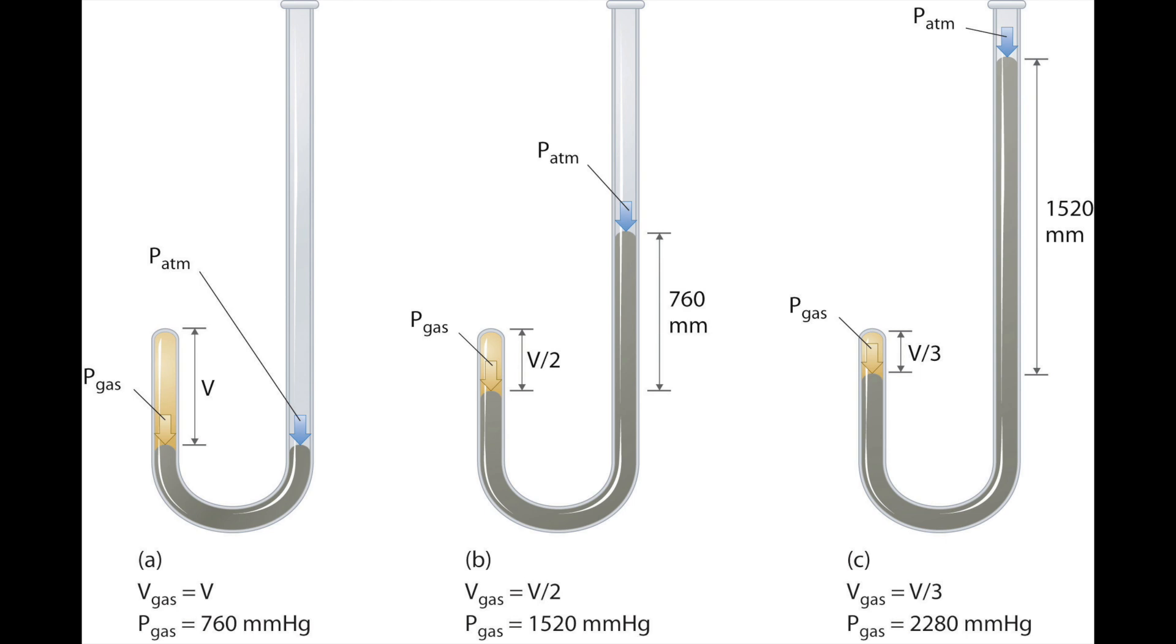This relationship was observed by doing a simple experiment as shown here. As you increase the pressure on a sample of gas, the volume decreases. The following J-shaped tube is a device used to measure pressure. In this tube, there is a gas and liquid mercury. As more mercury is added to the tube, the pressure of the confined gas increases and the volume of the gas decreases as a result.